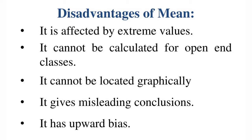Demerits or disadvantages of mean: it is affected by extreme values — if extreme values exist, the mean will fluctuate. It can be calculated from open-end classes. It cannot be located graphically. It gives misleading conclusions. It has an upward bias, meaning it is somewhat contradictory within measures of central tendency.